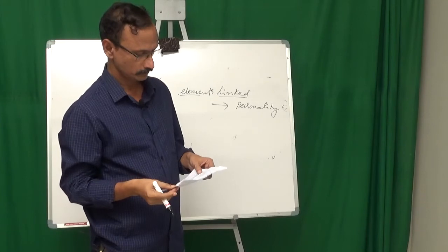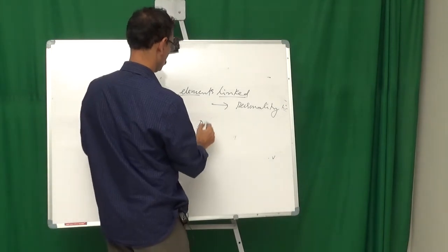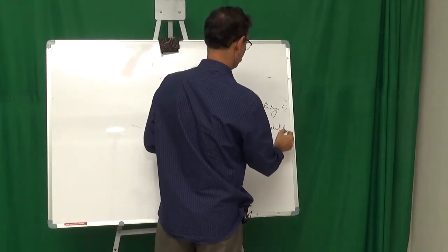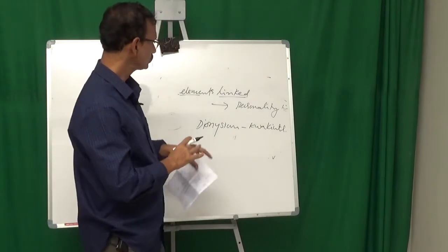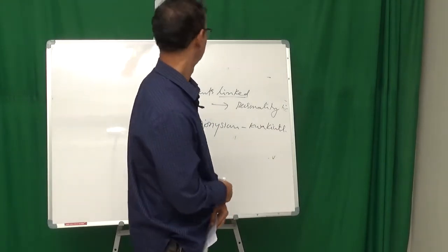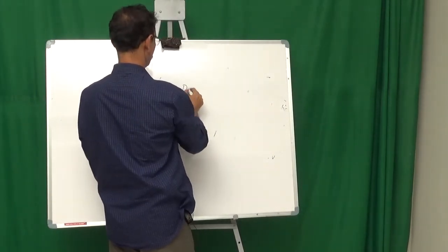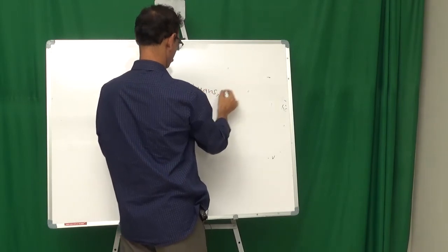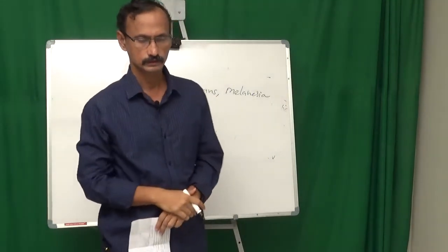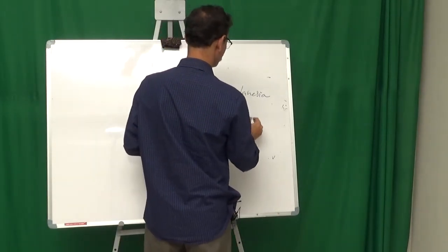Apollonian in Zuni and what she called Dionysian in Quarkite. Elements are linked. And so it is a part of a culture and personality school. And she takes up one more culture. That is Dubuans of Melanesia. She says this culture is producing a personality that is paranoid.